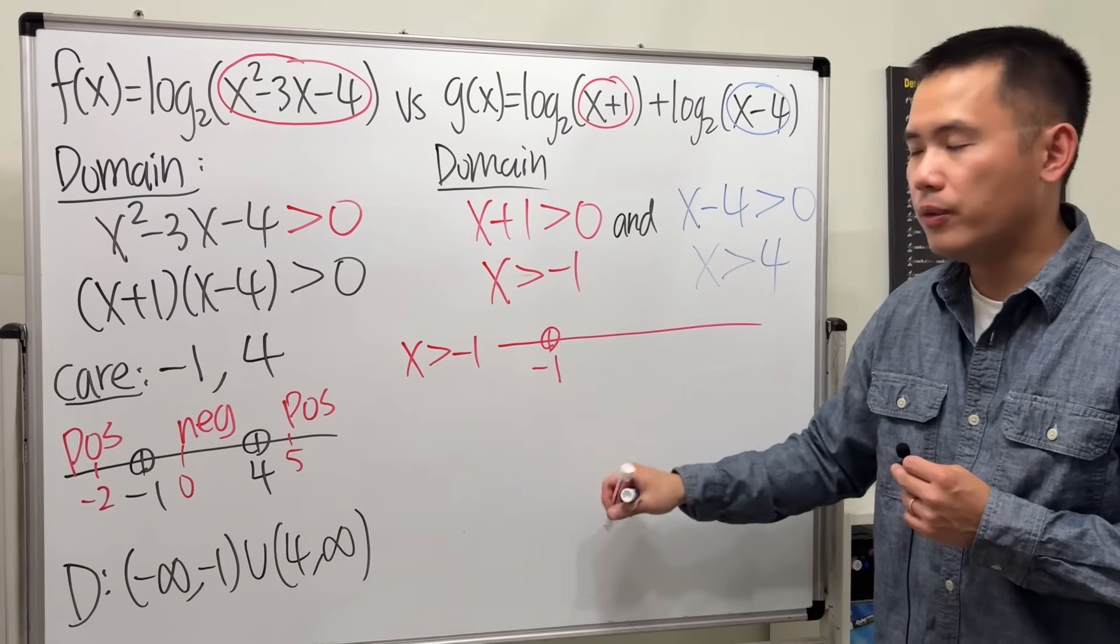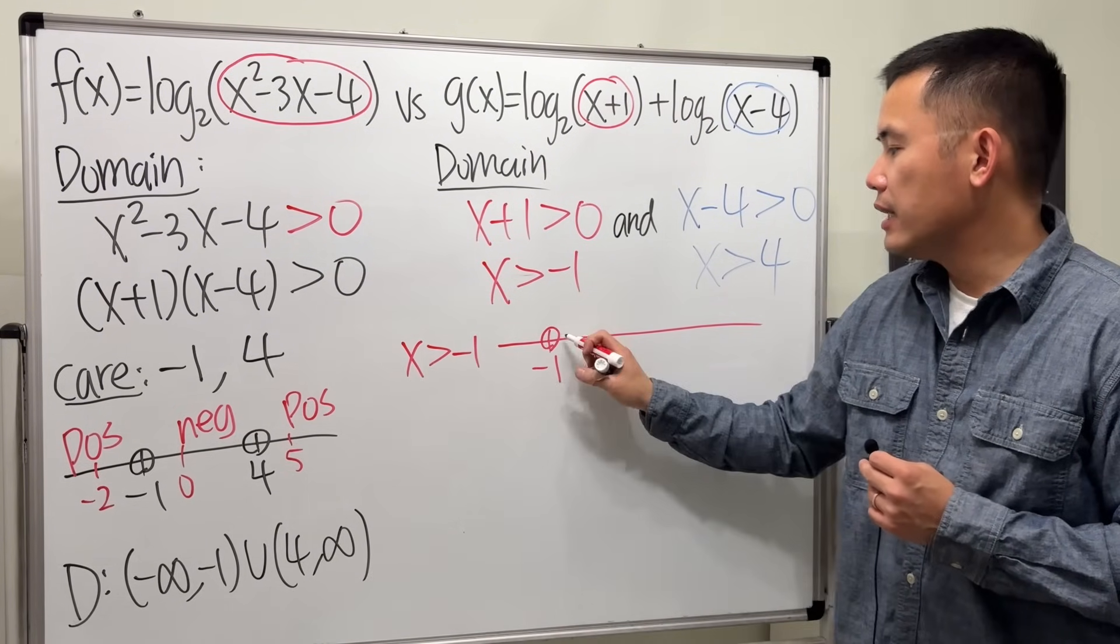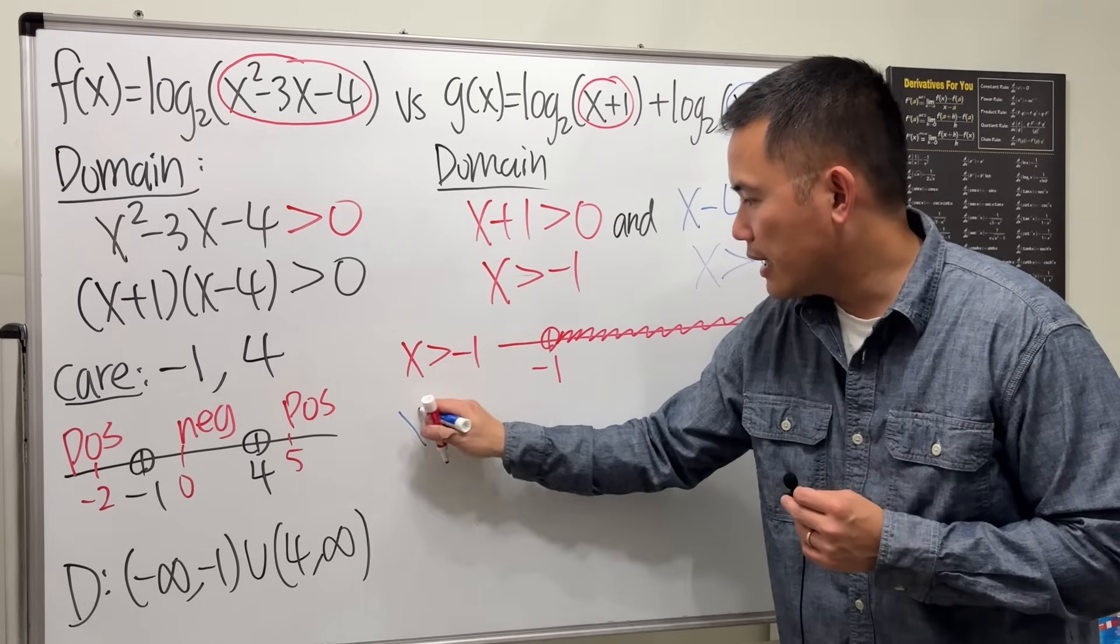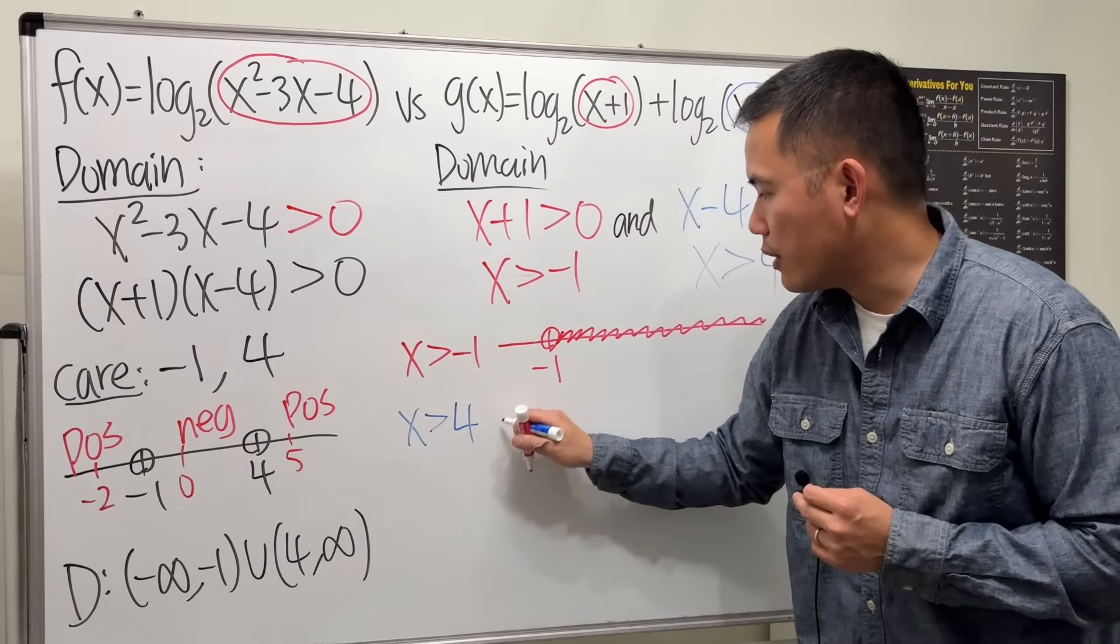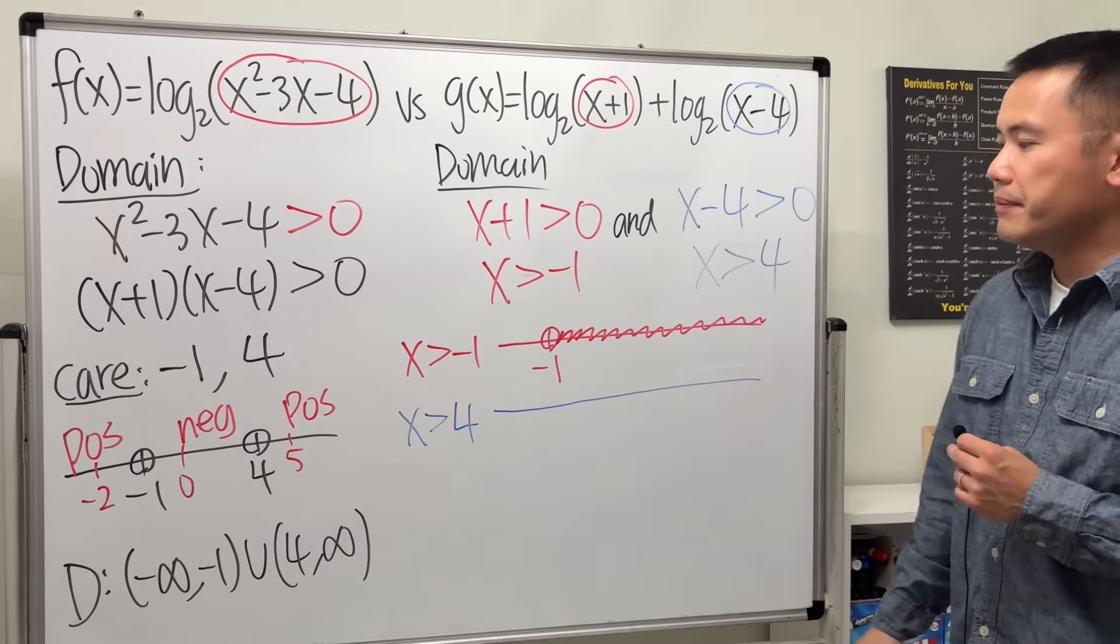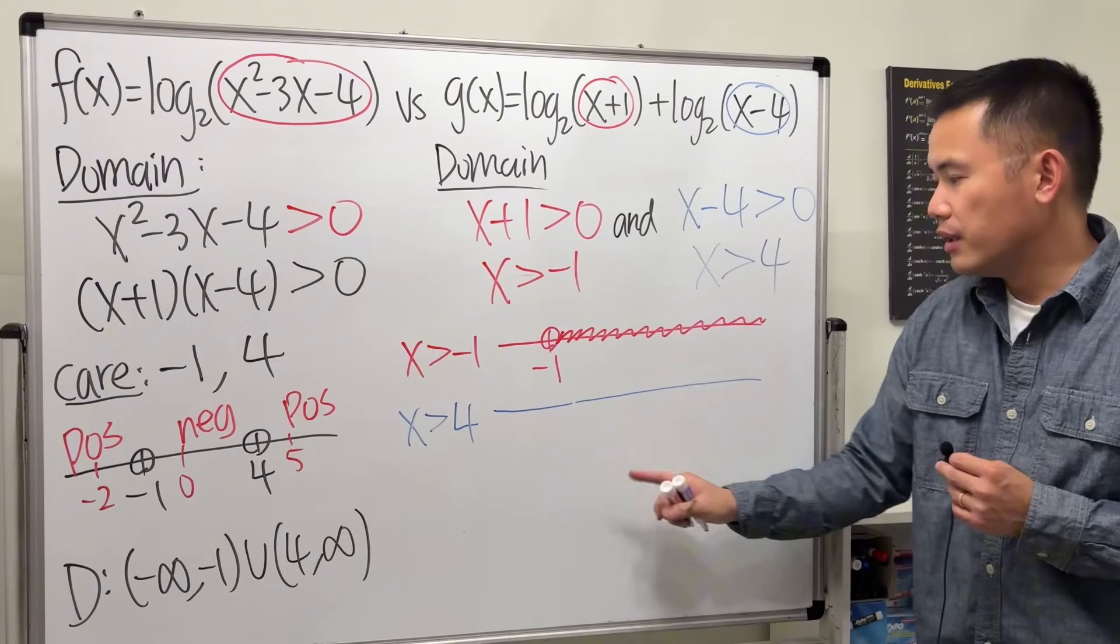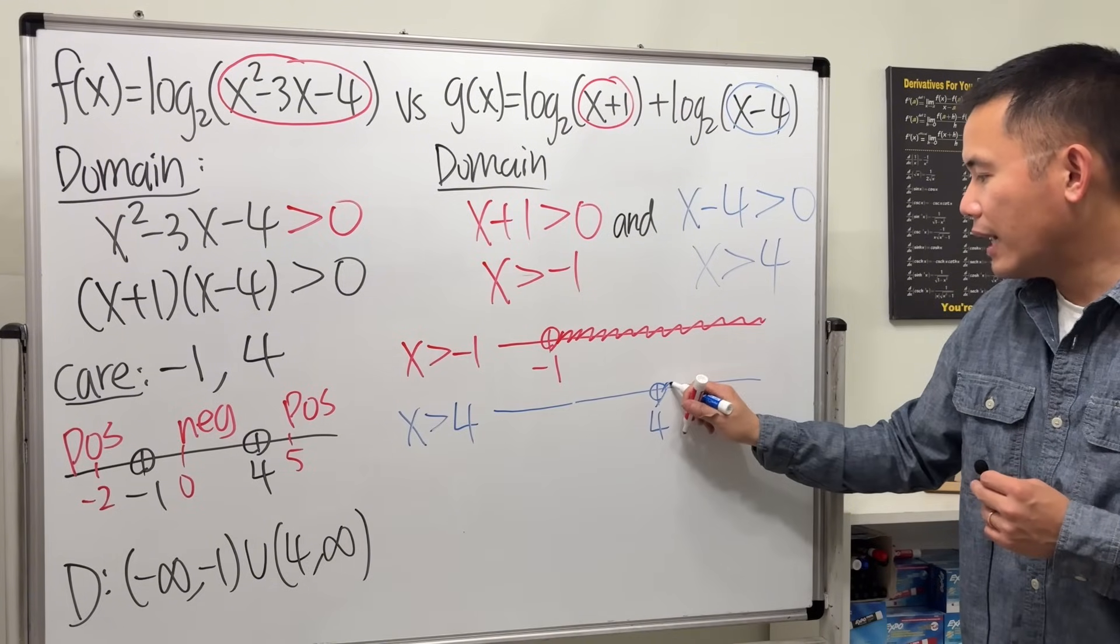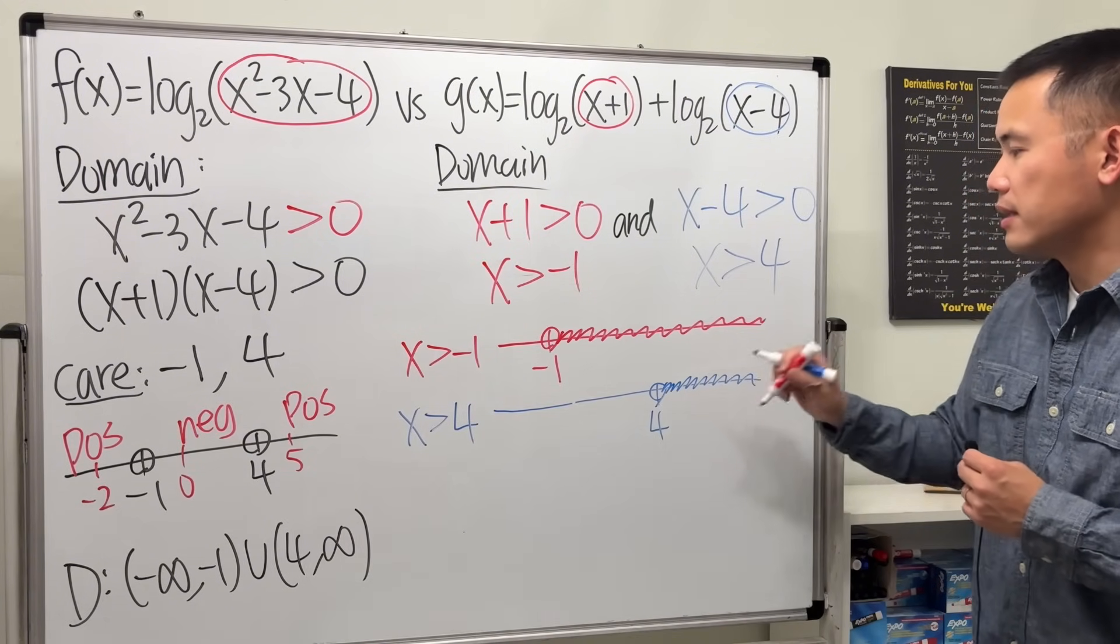x is greater than negative 1, you can look at the number line, let's say here is negative 1 with an open circle. x is greater than that means we go all the way to the right. For this is x is greater than positive 4, draw the same number line, here is negative 1 already, so 4 is somewhere right here, open circle, and again we have to go to the right because it's the greater than.